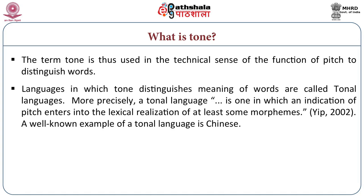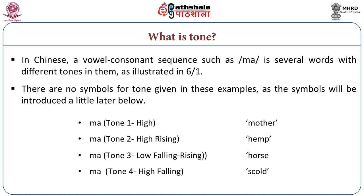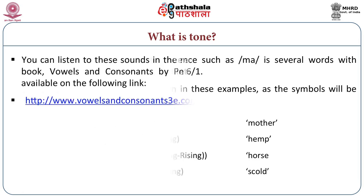Some examples of tonal languages are shown on screen. For example, in the Chinese language, especially the Mandarin variety, the same vowel and consonant sequence gives us four different words because there are four different tones. The word 'ma', uttered with different tones — high tone, high rising tone, low falling rising tone, or high falling tone — has four different meanings: mother, him, horse, and scold.